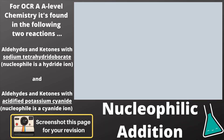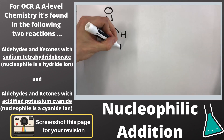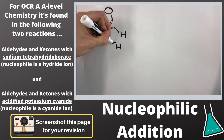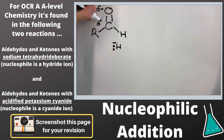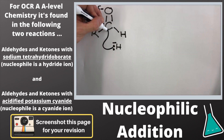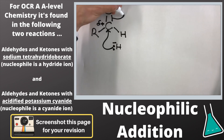We're going to start off with the mechanism for aldehydes and ketones with sodium tetrahydroborate, where the nucleophile is H-, that's from the NaBH4 aqueous. The bond in an aldehyde or ketone functional group, the C double bond O, is polar, and so the carbon atom can be attacked by our nucleophile. I've demonstrated this with the movement of the lone pair from the hydride ion to the carbon with the delta positive charge.